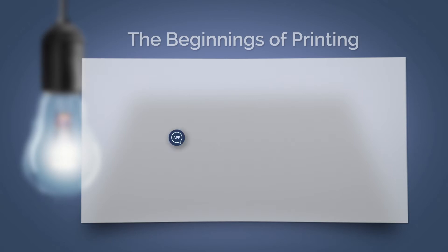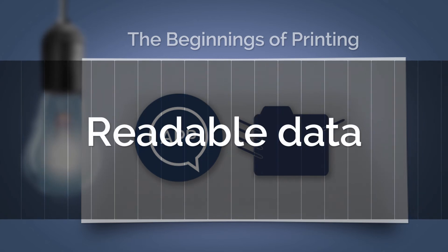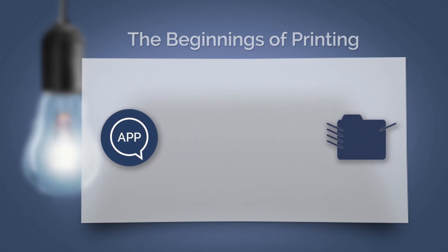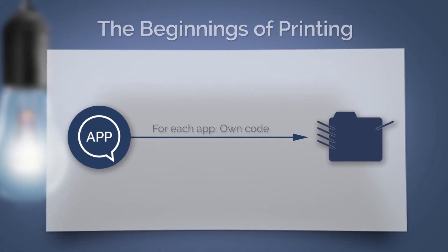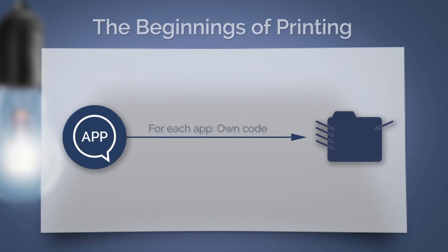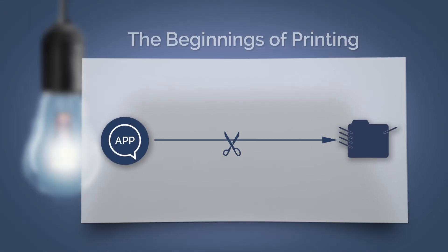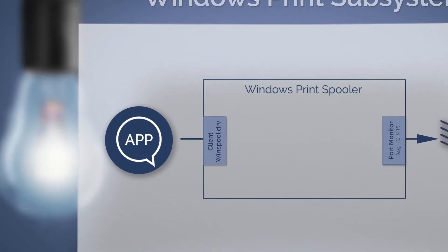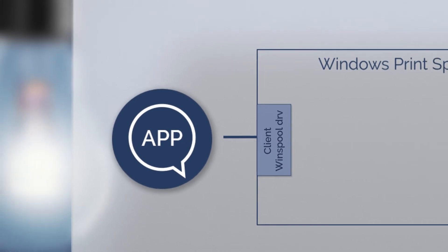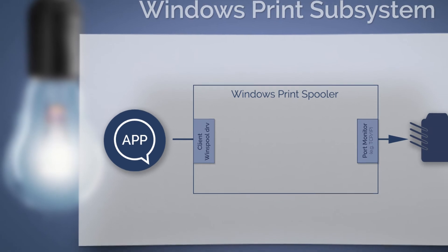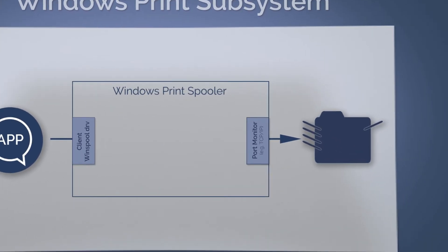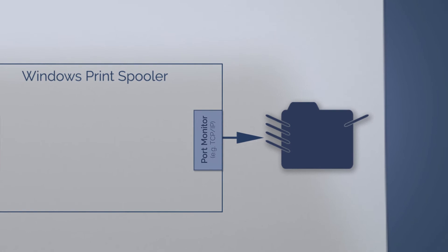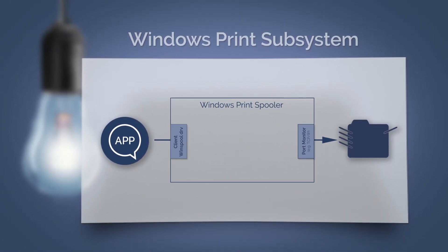We have an application and a printer. Technically, the data from the program has to be readable for the printer in order to be printed. Before, because the application sent the data directly to the printer, developers had to write their own codes for the printing process for each application. This was cumbersome and error-prone. That's why Windows introduced the spooler system, or print subsystem. During input, the app communicates with the client-user interface via windspool DRV in order to transfer the data from the document to be printed to the spool system. The output is a so-called print monitor. Through a port such as TCP over IP, the print data are taken from the spooler system to the printer.